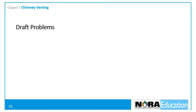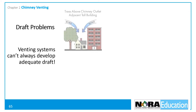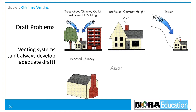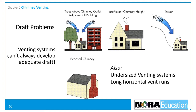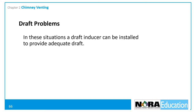Sometimes the venting system cannot develop sufficient draft to safely vent the combustion gases from the building. Downdrafts due to outside influences, short chimneys, terrain, outside exposed chimneys, undersized venting systems, long horizontal vent runs, and negative building pressure can cause draft problems. When the venting system cannot develop sufficient draft, a draft inducer — also known as a draft fan — can be installed to provide the necessary draft.